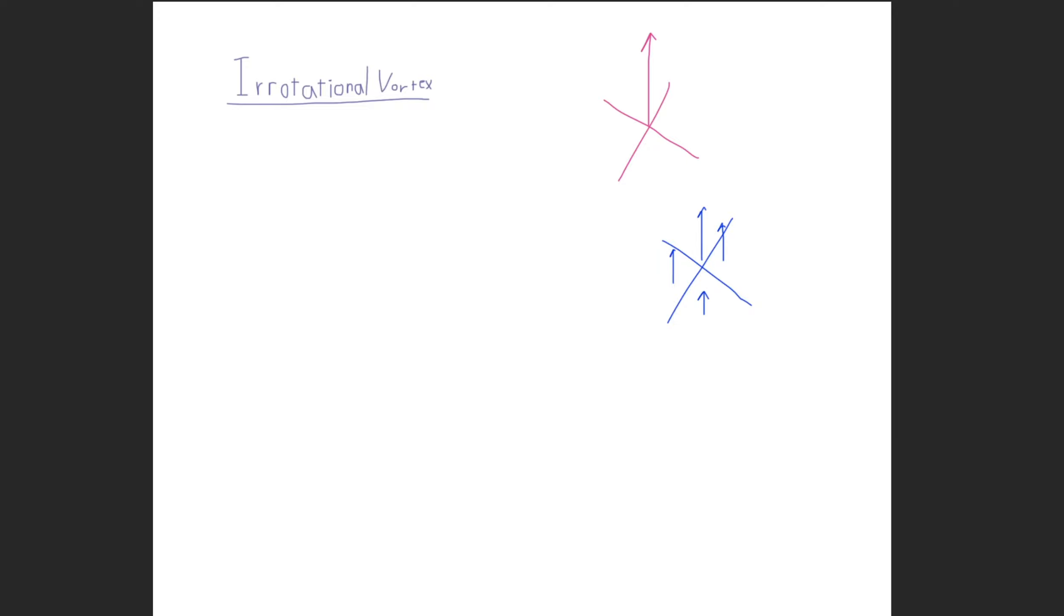I mean, you have vortex lines at every single point throughout the entire r theta plane. So this is a key difference between an irrotational vortex and a solid body vortex.